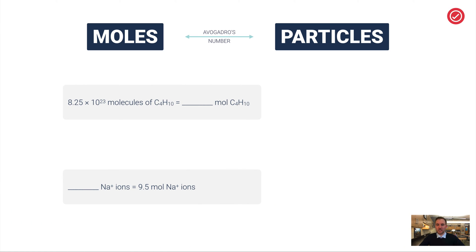Try some of these practice problems yourself. Pause the video now — by the time the red check mark appears in the top right corner, I'll show the answers. The first practice problem involves 8.25×10²³ molecules of C₄H₁₀ — by the way, that's what butane is.